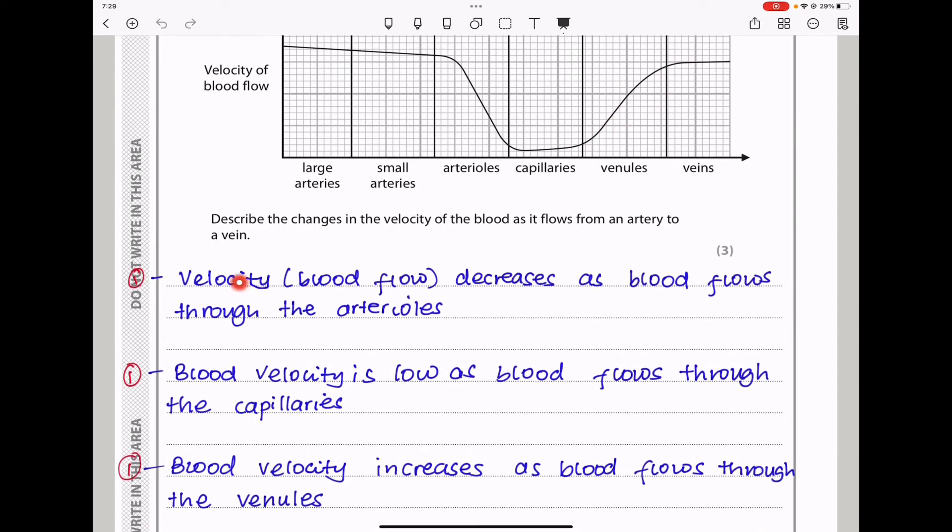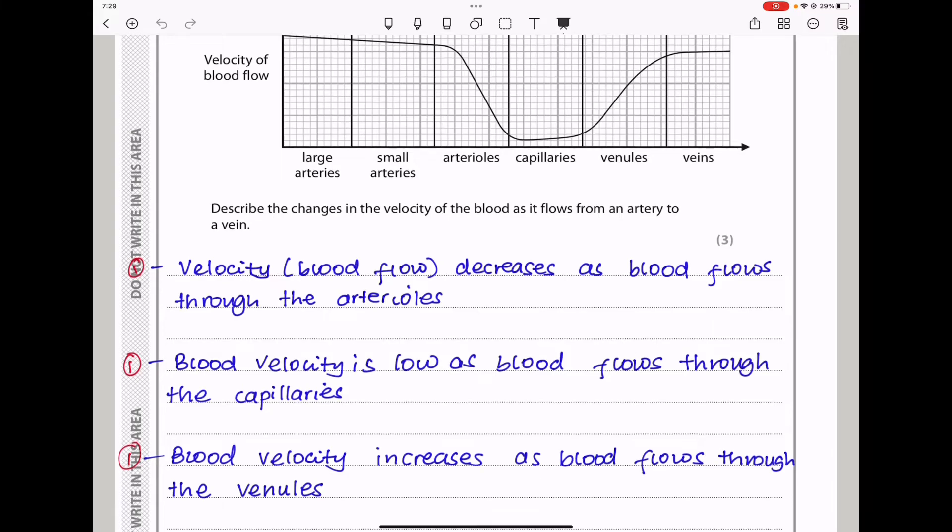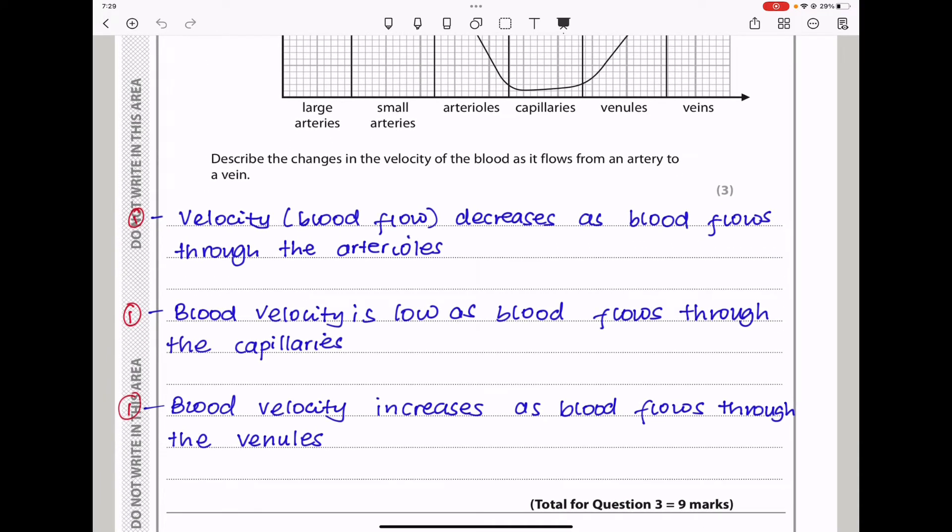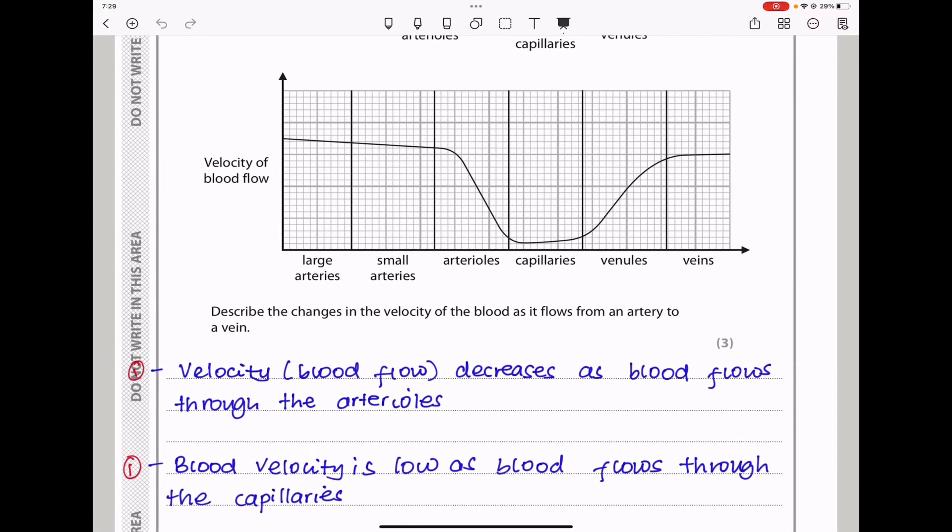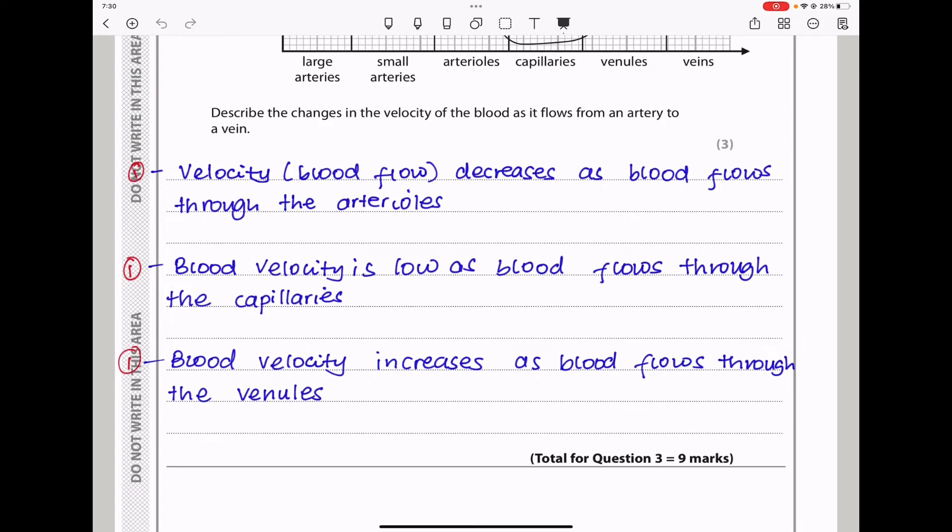So I said velocity of blood flow decreases as blood flows through the arterioles. Then the blood velocity is low as blood flows through the capillaries, meaning it's going to be maintained lower. Then blood velocity increases as the blood flows through the venules. So you can see there is a decrease here as it flows through the arterioles. There is slight maintenance as it flows through the capillaries, and then there is an increase as it goes through the venules in order to be maintained back in the veins. So this is the end of question three.